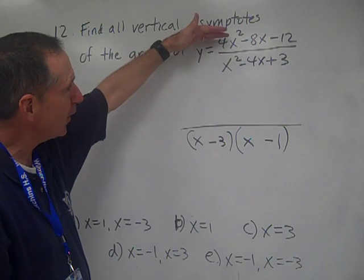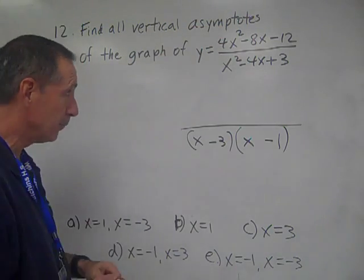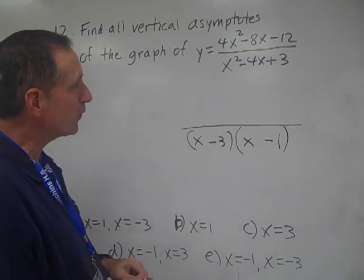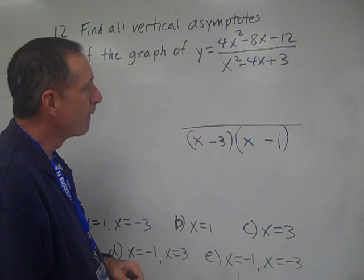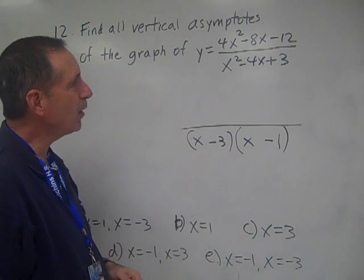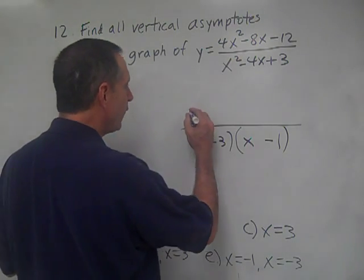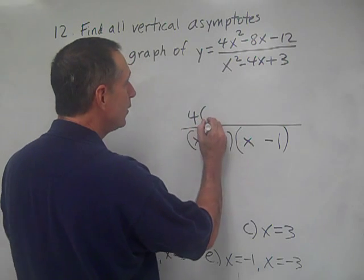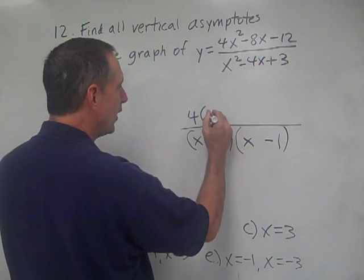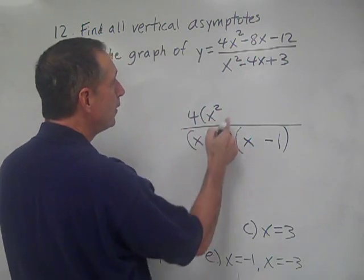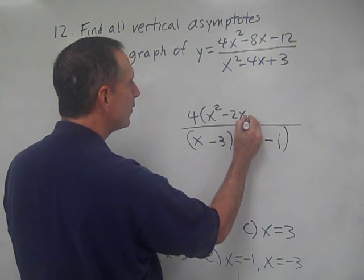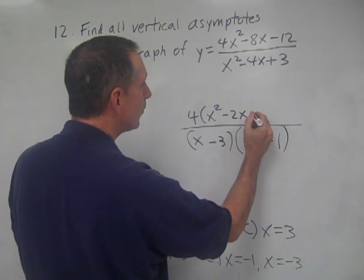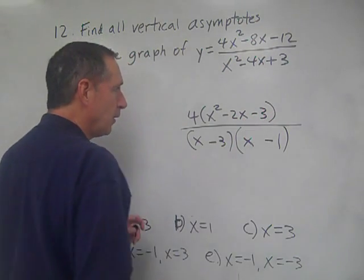So we know that it's going to have to do something with what's on the top now. How do we factor out what's on top here? You have a greatest common factor here of 4, so if we take out 4 from the numerator, we have 4, and we have left x² minus 2x minus 3.